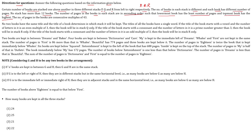The number of pages in the books are consecutive multiples of 43. That means if you know the number of pages in any book, then above or below that you will be able to find out the others. No two books have the same title, and the title of a book determines in which stack it will be kept. This is very important.